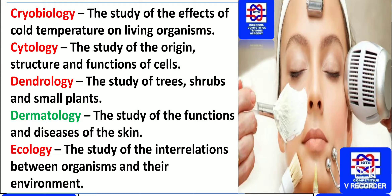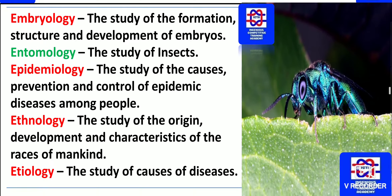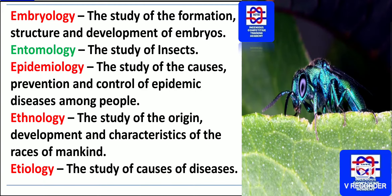Ecology is the study of the inter-relations between organisms and their environment. Next we have embryology — the study of the formation, structure and development of embryos. Entomology means the study of insects.